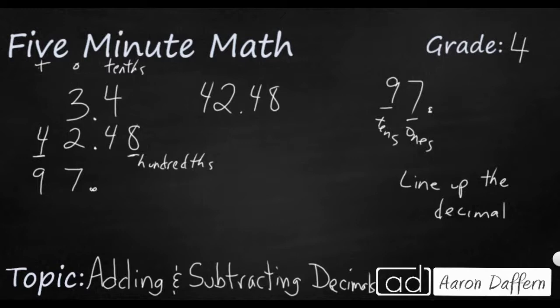So if we want to add all these up, all we have to do is have it look like this. Now if we want, we can add some zeros here. You can always add zeros after the decimal. That's going to make it a little bit easier to look at, and it's not going to change the value at all.